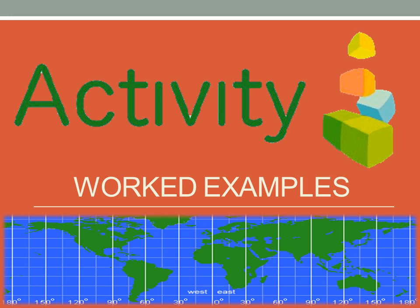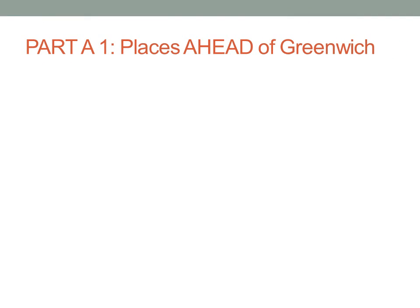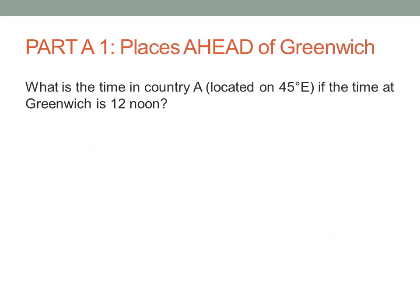To calculate time along lines of longitude, we're going to explore some worked examples following the outline of the objectives previously stated. Part A1: places ahead of Greenwich. Our first worked example states: what is the time in country A, located on 45 degrees east, if the time at Greenwich is 12 noon?